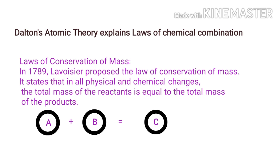An atom is the smallest particle that takes part in a chemical reaction. This is why Dalton said that in a chemical reaction there is only a rearrangement of atoms. The total number and kind of atoms always remain the same — which atom it is and how many, that always remains the same.